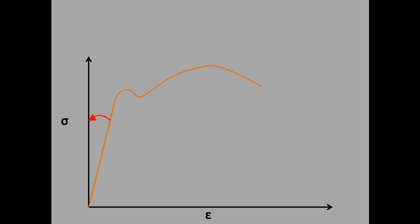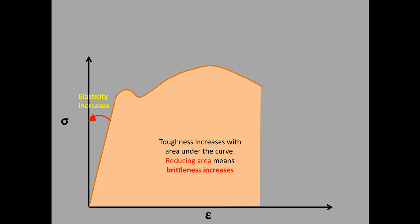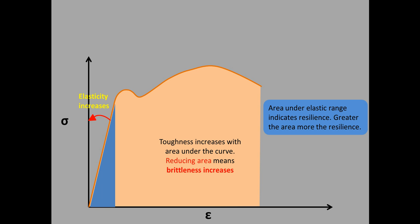This shows the angle suspended by the line of proportionality with the vertical line, and this direction shows that elasticity increases. The area under the stress-strain curve indicates toughness — greater the area, toughness increases; less the area, brittleness increases. The area under the elastic range indicates resilience — greater the area, more the resilience.